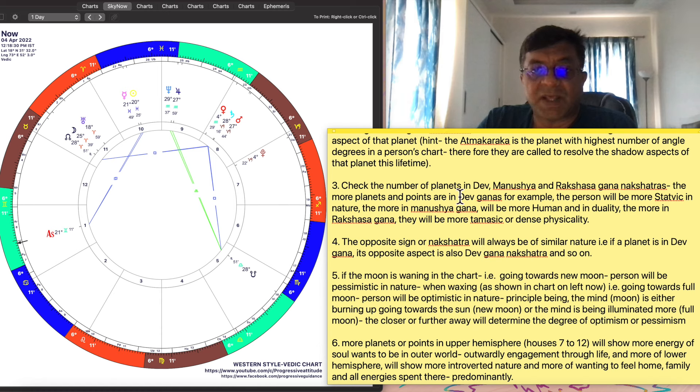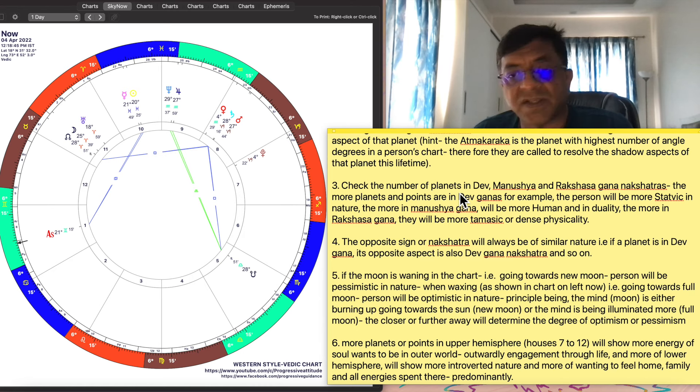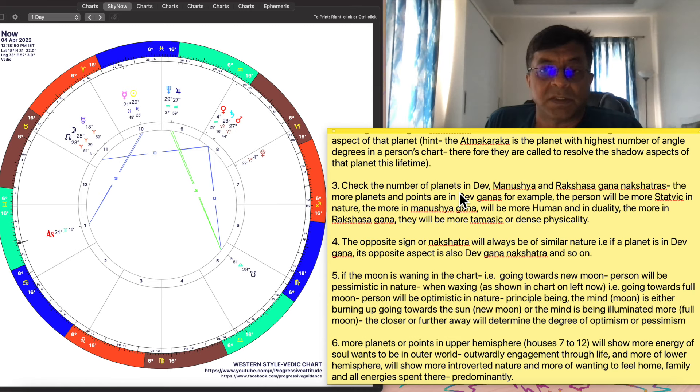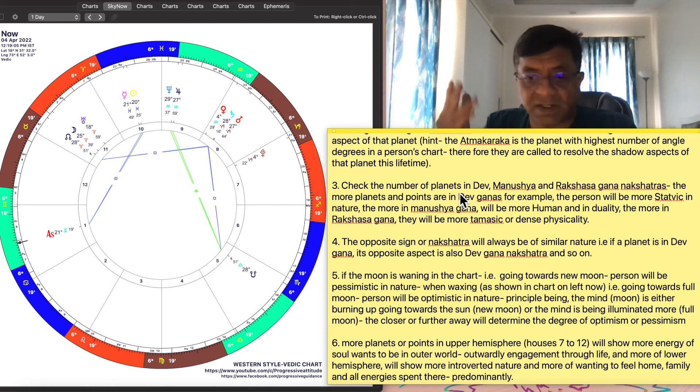Number three, check the number of planets in Dev, Manushya or Rakshasa Gana nakshatra. The Ganas I have spoken of in the three groups of people on earth. You can check that video if you want. Everything is there in evolutionary astrology series playlist. The more planets and points in Dev ganas, the person has come to take the higher evolutionary point, the knowledge and wisdom point of the particular planet. Even if it's a malefic planet like Rahu, Ketu or Saturn or Mars or Sun or as such. The person will be more sattvic in nature. The Manushya Gana will be more human and more in duality. The Rakshasa Gana will be more tamasic or dense physicality. They are more materialistic if you want to call it that.